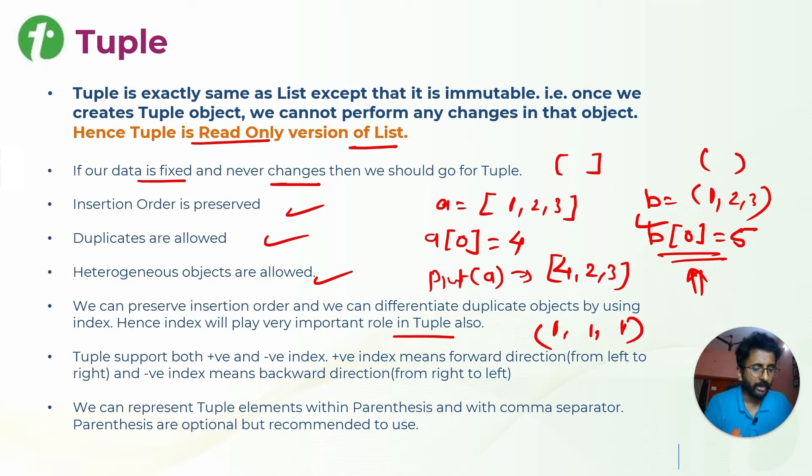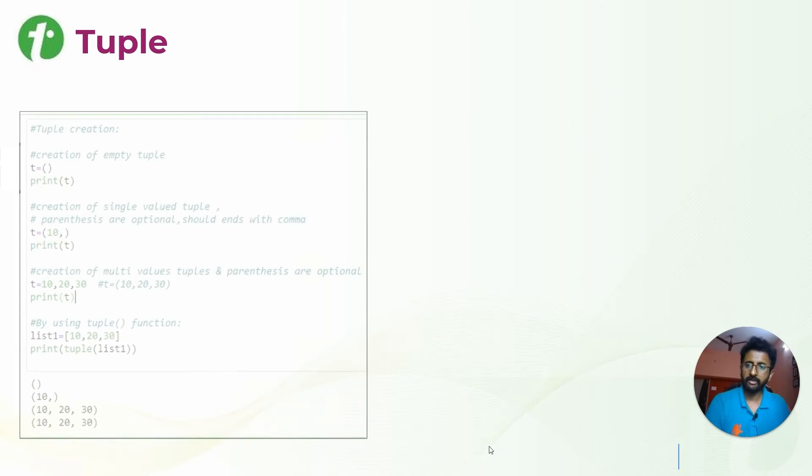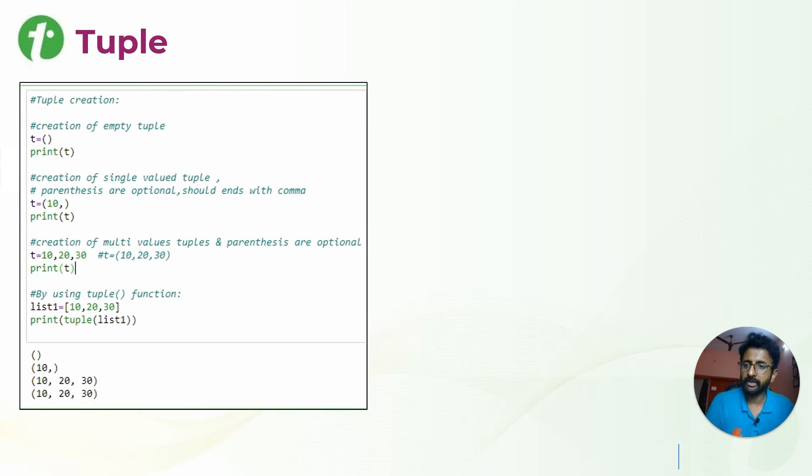Whenever I am talking about indexes, we have seen forward and backward indexing. That means 0, 1, 2 are positive indexes, and minus 1, minus 2, minus 3 are negative indexes. The definition of tuple is inside round brackets with comma-separated values. So we will see how to define the tuple.